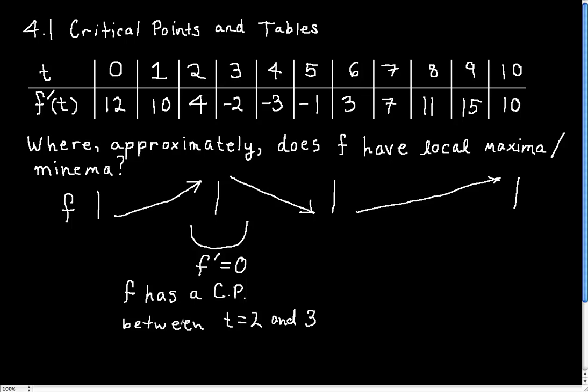The second thing we want to do is we want to say what kind of critical point it is. And we can see that to the left of wherever this critical point is, in between 2 and 3 somewhere, f is increasing. And to the right it's decreasing. So it's sort of shaped like this-ish, if you can follow the cursor. And so this must be a local max. So this critical point, wherever exactly it might be, is going to correspond to a local maximum.